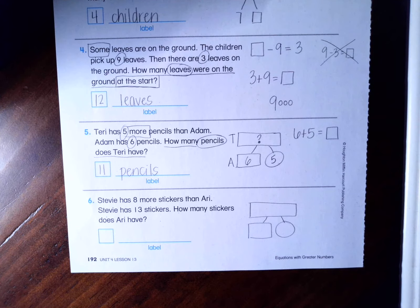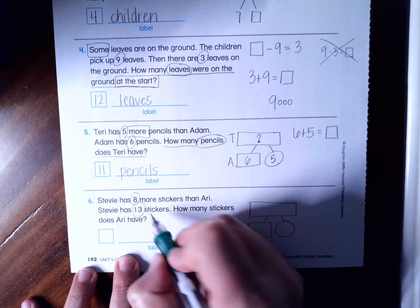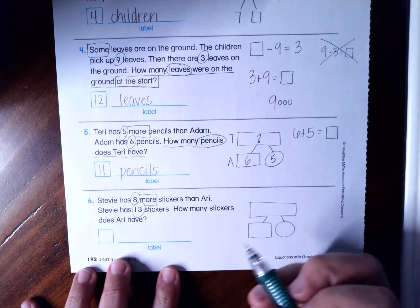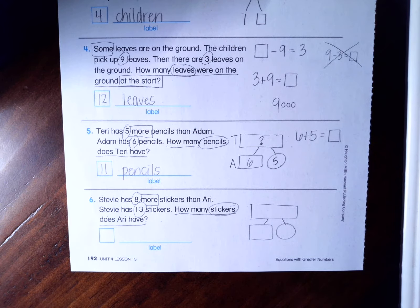Okay. How'd you guys do? Did you get it? So we have eight and 13. I see the word more right there. I know that I'm trying to figure out how many stickers does Ari have? So first I need to label my comparison bars.